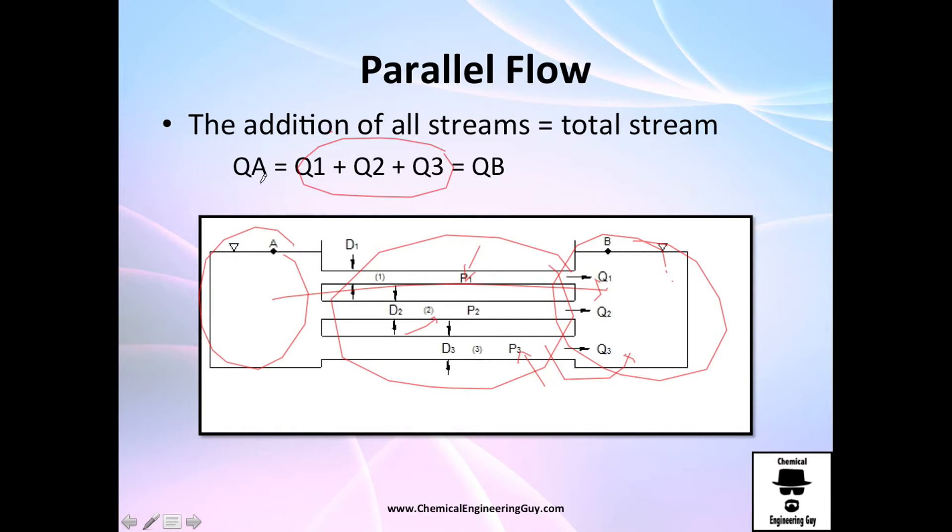We're talking about incompressible flow and steady state. If we have 10 liters per second from A to B, then Q1 + Q2 + Q3 must equal that flow. This is very important—this will be one of the first rules when solving parallel flow.